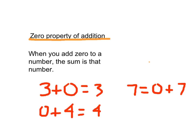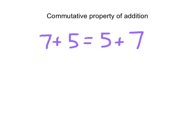Our commutative property of addition states that when you change the order of the addends, the sum stays the same. As you see here, the order of the addends is 7 plus 5, whereas on the other side we've changed the order to 5 plus 7. Both sides equal 12, so 7 plus 5 does equal 5 plus 7.